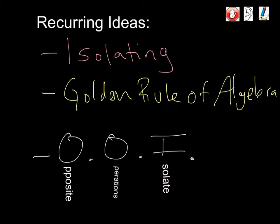For this lesson, we have some multiple recurring ideas — things we've talked about in the past that are coming up again as we move into two-step equations. One thing is we're still going to be isolating. We're still going to be using that golden rule of algebra: whatever you do to one side of your equation, you must do the exact same thing to the other side. And finally, we're using our OOIs — opposite operations help us isolate. Jot these three things down so you remember what we need to do.